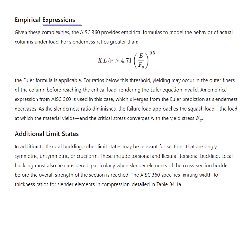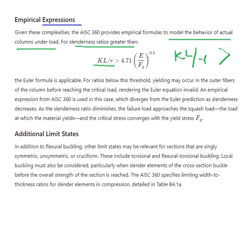Given these complexities, AISC provides empirical formulas to model the behavior of actual columns. We calculate the KL/R ratio. If this ratio is greater than 4.71 times the square root of E over Fy, then the Euler formula is applicable.